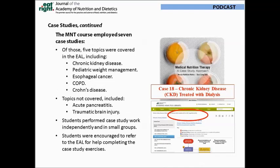In the Medical Nutrition Therapy course, we focus on seven case studies, and five of those were covered in the Evidence Analysis Library. The two topics not covered included acute pancreatitis and traumatic brain injury. Each case study provided admitting history, physical exam findings, and lab data for the patient, along with documentation of MD orders, nursing assessment, and notes from other healthcare providers. At the end of each case study is a series of exercises designed to help students dissect the patient record and prepare their nutrition intervention. Students worked independently or in small groups, and were encouraged to refer to the Evidence Analysis Library to help formulate their responses.